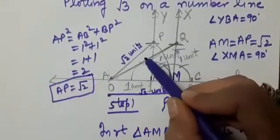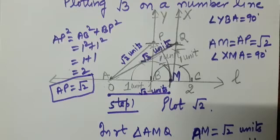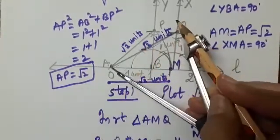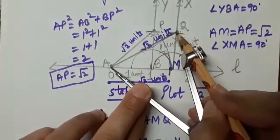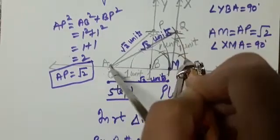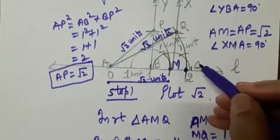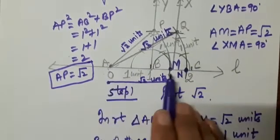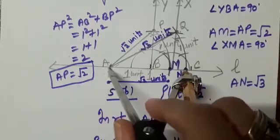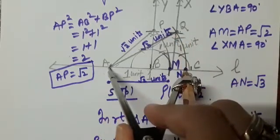So from A to Q this is square root of 3 units. To plot square root of 3 on the number line, we set the radius of the compass from A to Q, which is square root of 3, and draw an arc. This arc cuts the real number line at point N. So from A to N is square root of 3, because AN equals AQ, and AQ is square root of 3. So AN is also square root of 3 units.